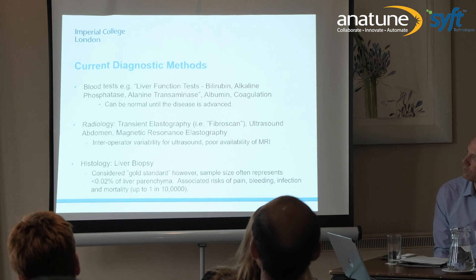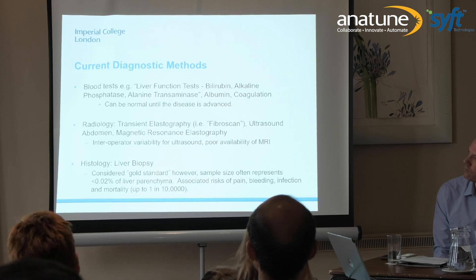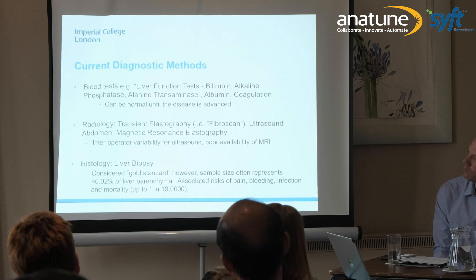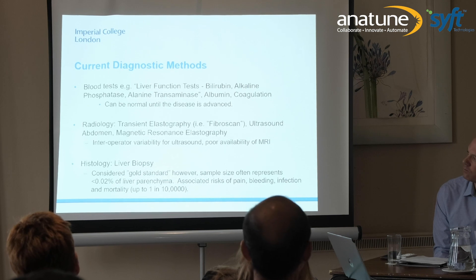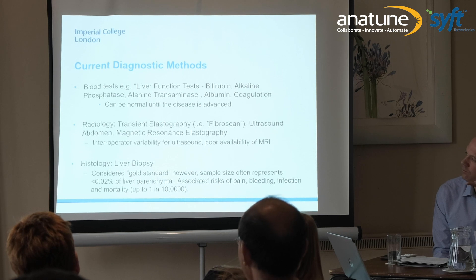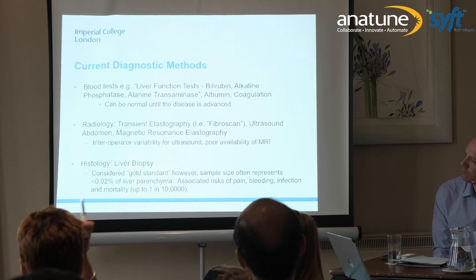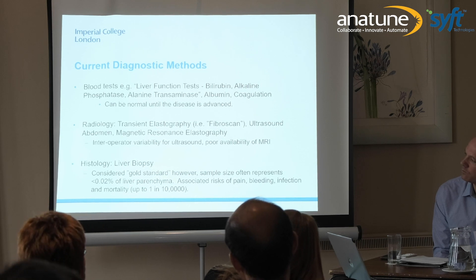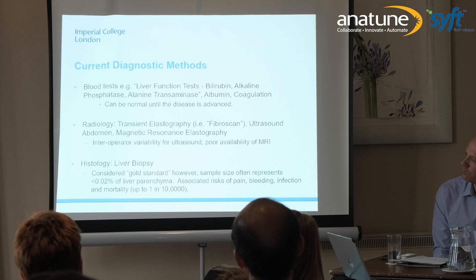In terms of how we look at the liver at the moment, we have so-called liver function blood tests which have limited use — they can be quite normal until the disease is very advanced. We've got basic ultrasound imaging, transient elastography which gives a measure of liver stiffness as a surrogate marker for fibrosis, and MRI imaging which isn't particularly widely available. The gold standard is a liver biopsy, but this is unpleasant for patients — it can be painful, there's a risk of bleeding, and there's a small but significant mortality attached of one in 10,000.